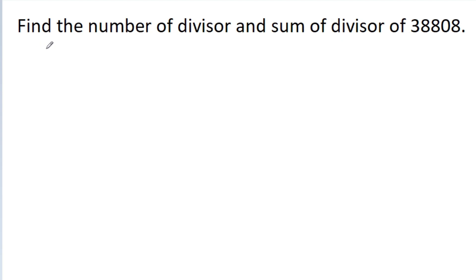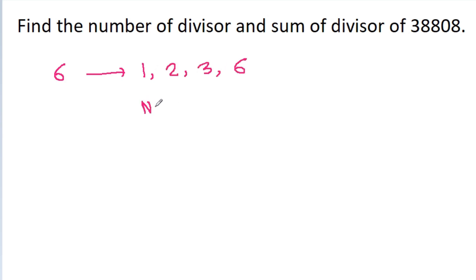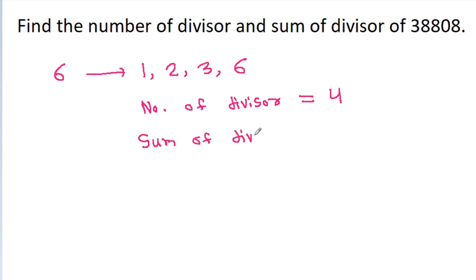In this video, we have to find the number of divisors and sum of divisors of 38808. So for any number, take 6 as an example: the divisors of 6 are 1, 2, 3, and 6. So the number of divisors is 4, and the sum of divisors is 1 plus 2 plus 3 plus 6, that is 12.